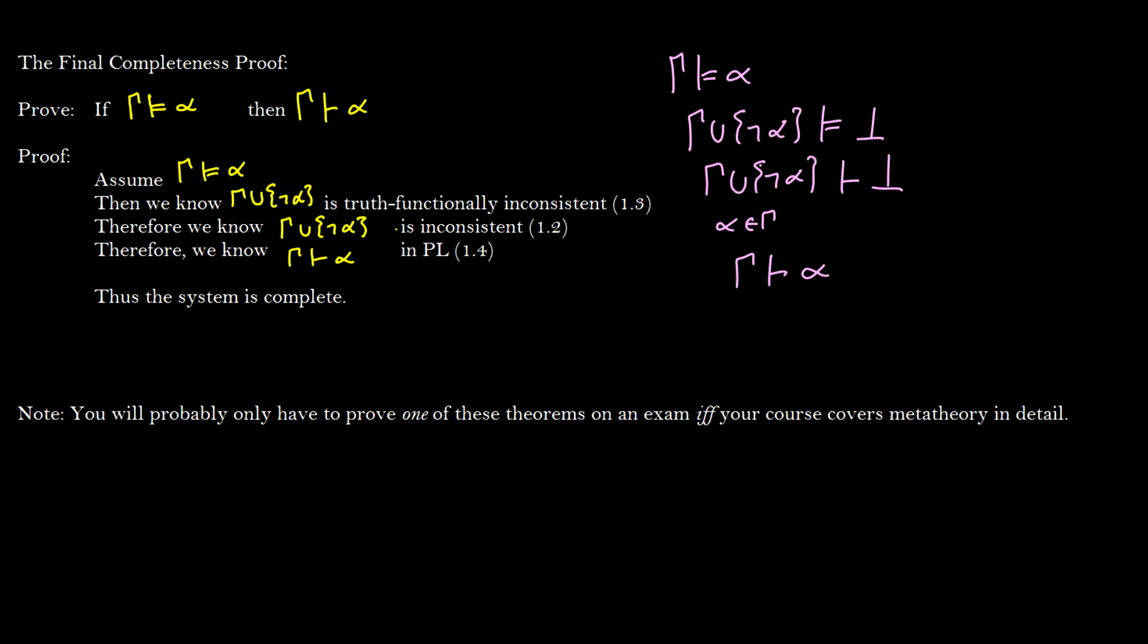So we have this completeness proof that says if it's truth functionally consistent then it's consistent. Or rather if gamma truth functionally proves alpha or I should say entails alpha then gamma proves alpha. So the system is complete. And that was five videos of the completeness proof.